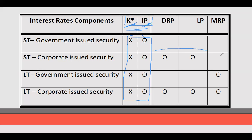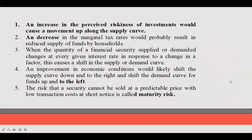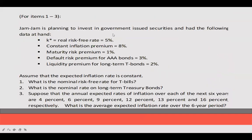Take note of this. Now let us illustrate with a problem. Jam Jam is planning to invest in a government-issued security with the following data: real risk-free rate is 5%, constant inflation premium is 8%, maturity risk premium is 1%, default risk premium for AAA band is 3%, equity premium is 2%. Assume that the expected inflation rate is constant.